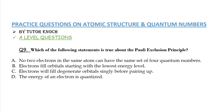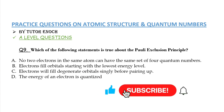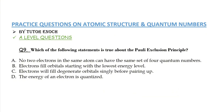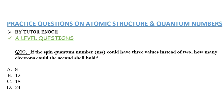Question nine asks which statement is true about the Pauli exclusion principle — a teaser for the next video on the Hund's rule, Pauli exclusion principle, and Aufbau principle. The Pauli exclusion principle states that no two electrons in an atom can have the same values for all four quantum numbers — principal, azimuthal, magnetic, and spin. The answer is option A.